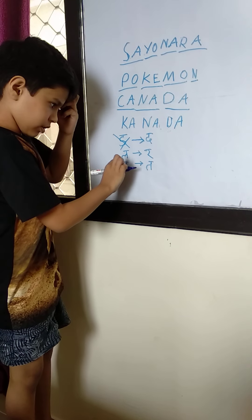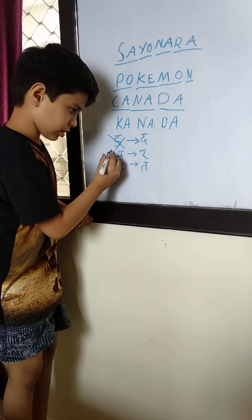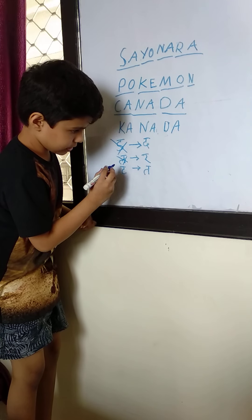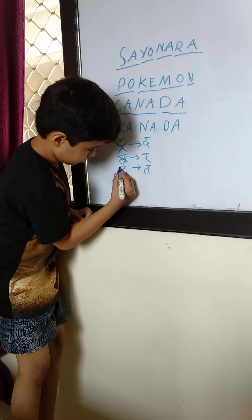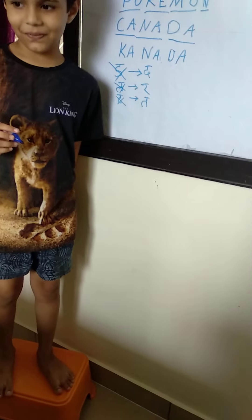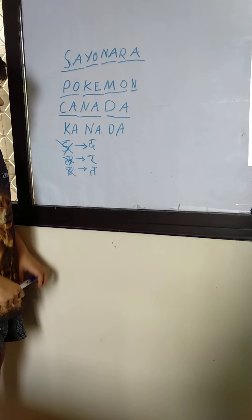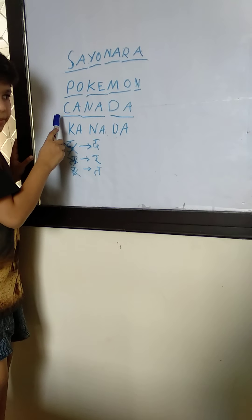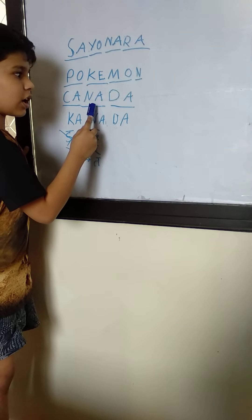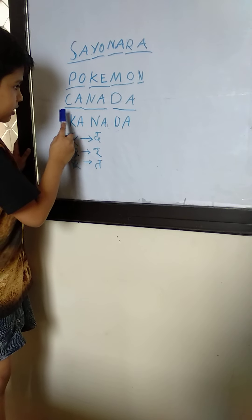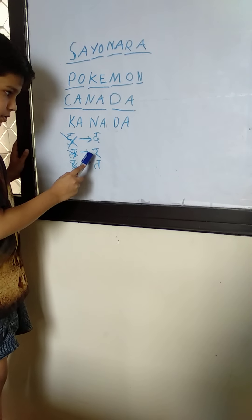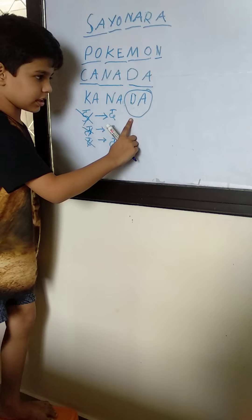La bhi nahi hota, usse pronounce karte ra. Ta bhi nahi hota, usse pronounce karte ta. Ka, da — pronounce karte ta. Yeh Canada nahi, yeh Kanada hai.